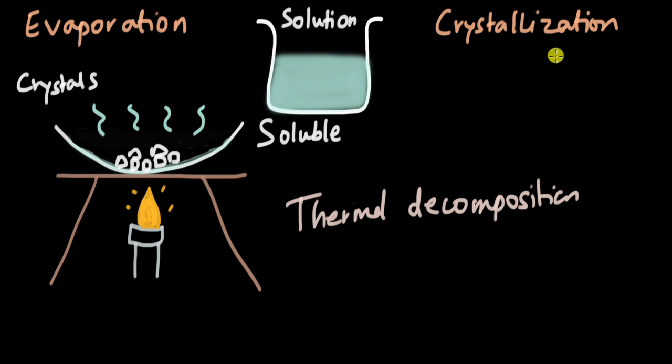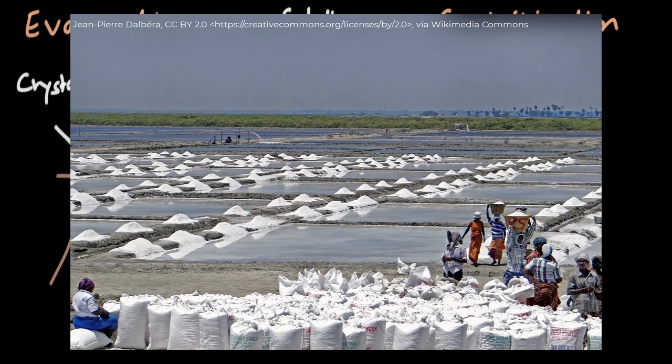This method of evaporation is also useful for farmers. Farmers collect seawater and the heat from the sun evaporates the water from this solution, which only leaves behind crystals of salt. That is how salt can be obtained from seawater.